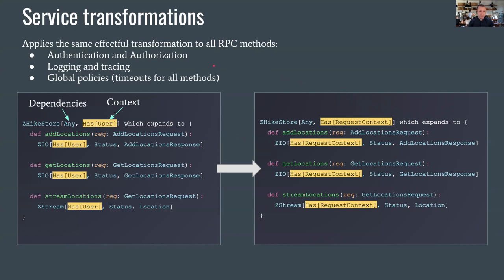The service transformation has a lot of applications. You can decide the transformation adds logging and tracing — before or after every effect your service performs, you do the same logging operation or create a distributed system trace entry. Or you apply a global policy, like setting the same timeout for all your methods. The service transformation allows you to apply the same effect combinator to all the effects your service can gain, which is a unique capability of ZIO gRPC.